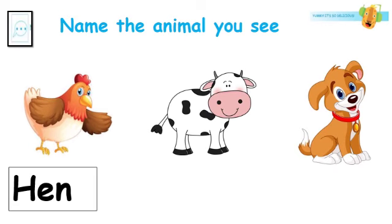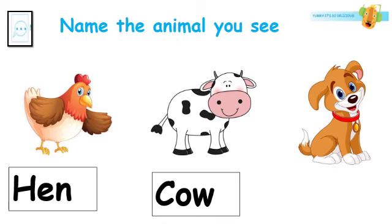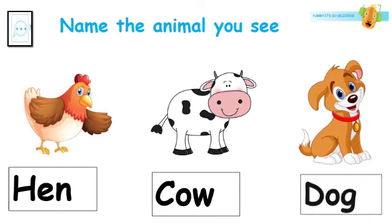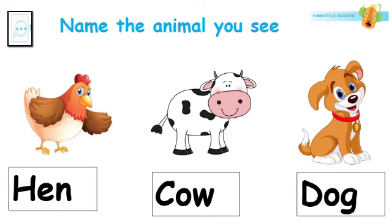This is a hen. This is a cow. This is a dog. Great.